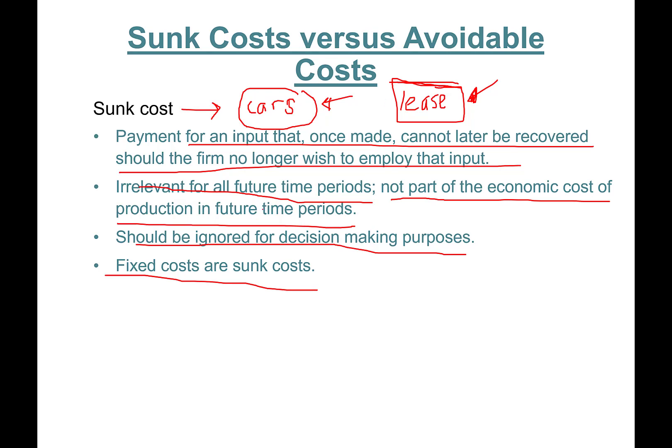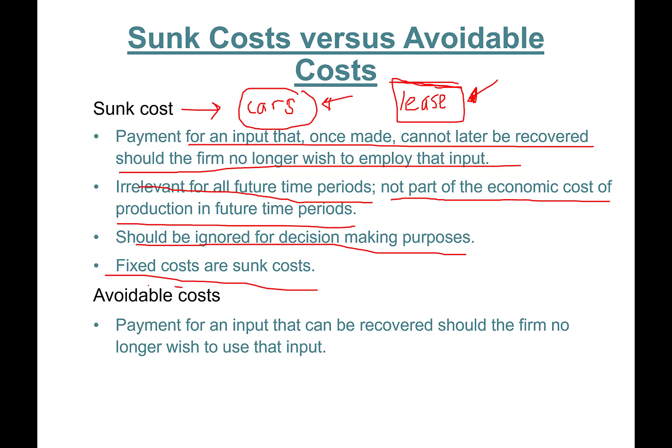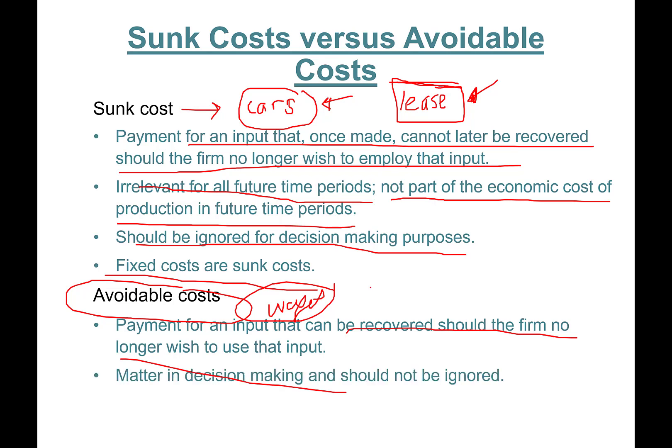Avoidable costs are payments for an input, such as wages or salaries, that can be recovered should the firm no longer wish to use that input. If I have a pizza restaurant and I have no customers, I'm going to shut down. I don't have to pay people their wages. If I have a coffee shop, the cost of coffee beans, if I have no customers, is zero.